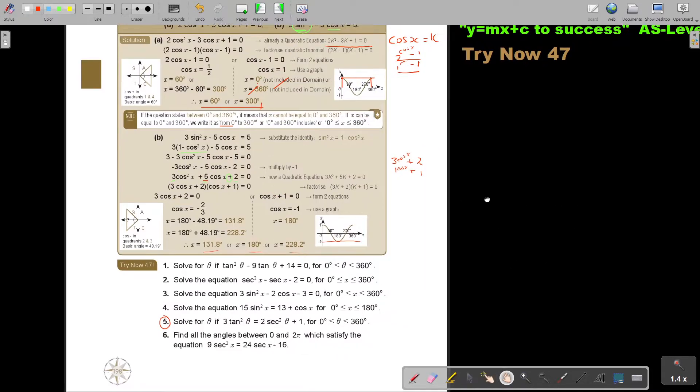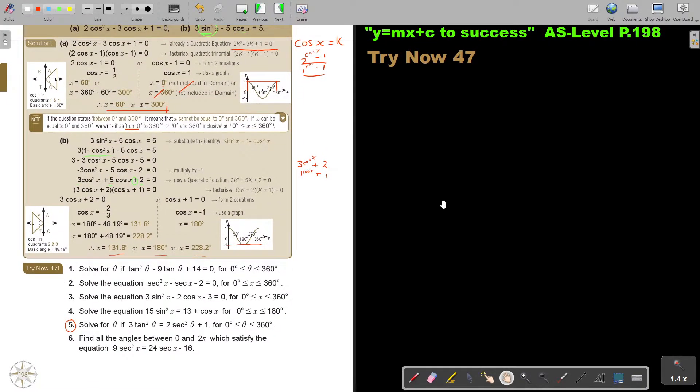I read, solve for theta. So, stop. Make sure your calculator is on degrees. Now, we can write it. So, number 5. 3 tan squared theta equals 2 sec squared theta plus 1. And what is my interval? I'm going to write it.